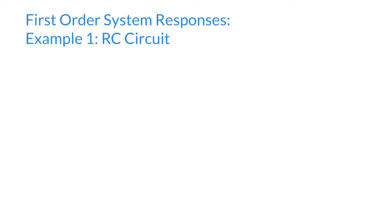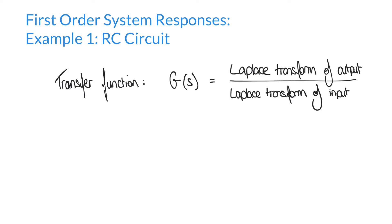Hello and welcome to this first video on first order system responses. In our previous videos we have talked about the transfer function of a system. We define the transfer function as G of S in the S domain, being equal to the Laplace transform of the output divided by the Laplace transform of the input. We've used this method to determine the transfer functions of various systems.